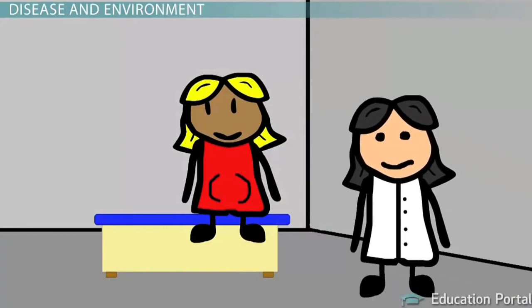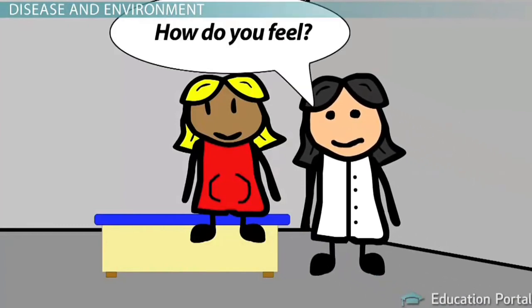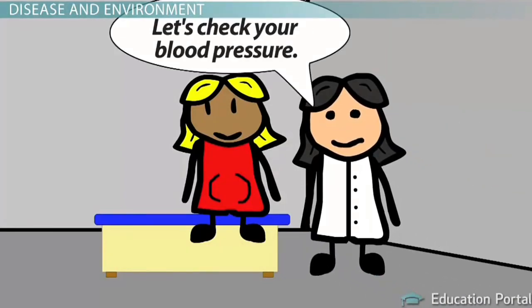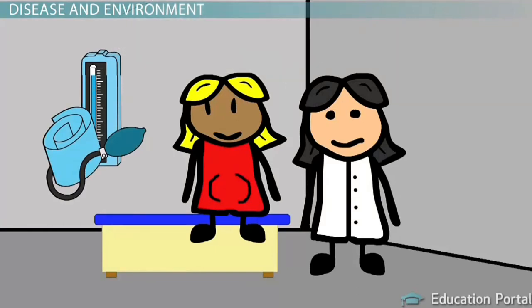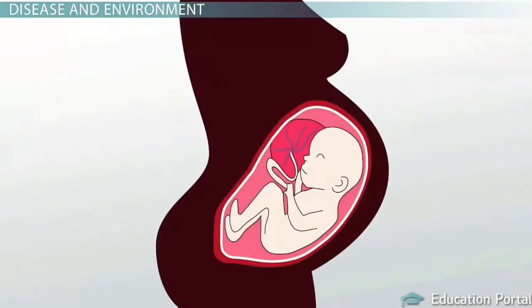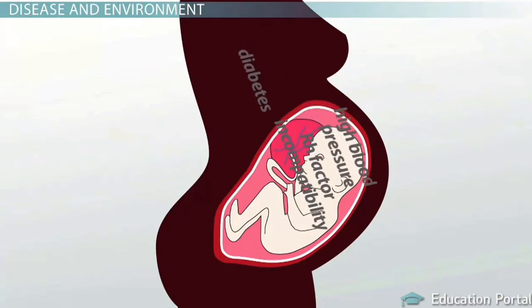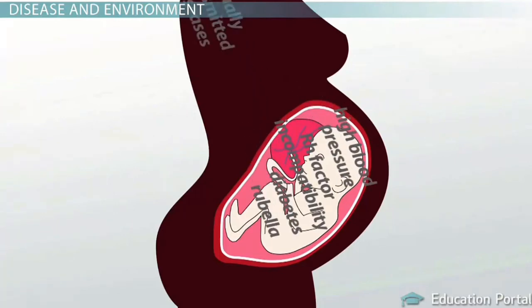Maternal diseases and environmental concerns are also factors that can harm prenatal development. Maternal diseases and infections can produce defects. Prenatal development can be impacted by factors such as Rh factor incompatibility, high blood pressure, diabetes, rubella, and some sexually transmitted diseases.